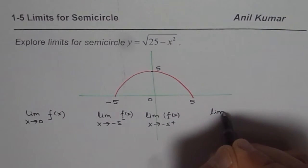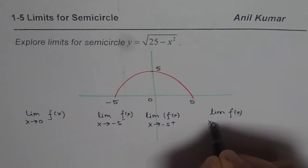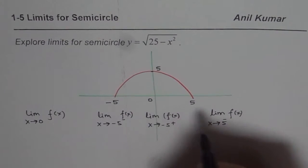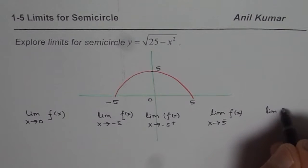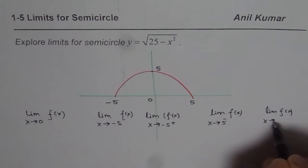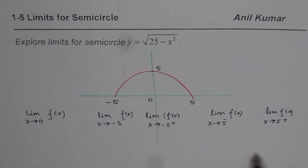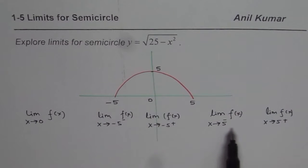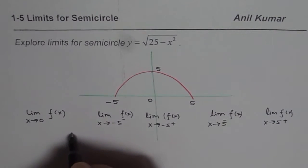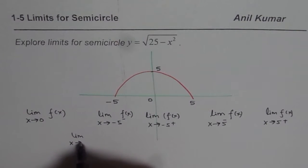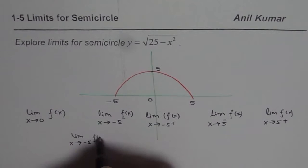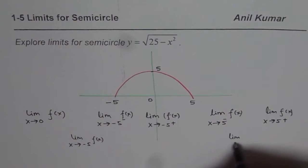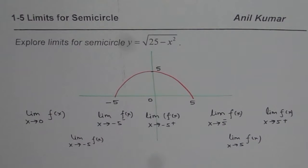Limit of the function f(x) when x approaches 5 from the negative side, that means from the left. Limit of the function f(x) when x approaches 5 from the positive side. These are the limits which we need to work out. And once we find these limits, we will be in a position to also answer what is the limit of the function as x approaches minus 5, and what is the limit of the function when x approaches 5.